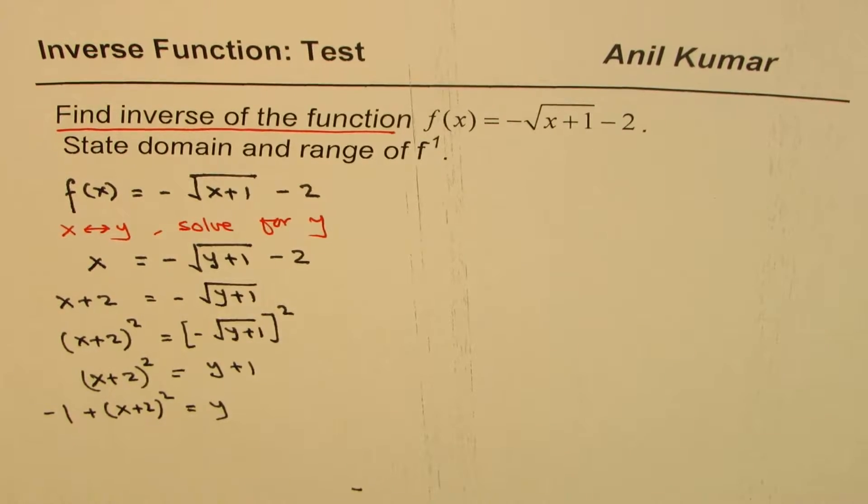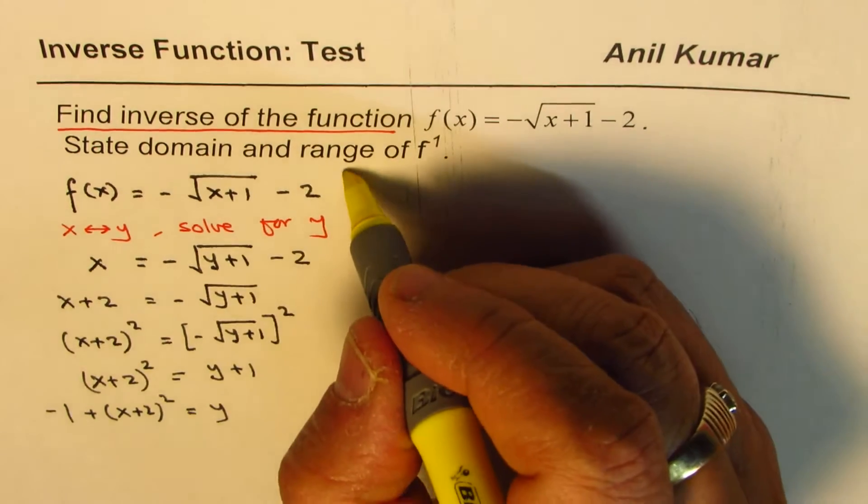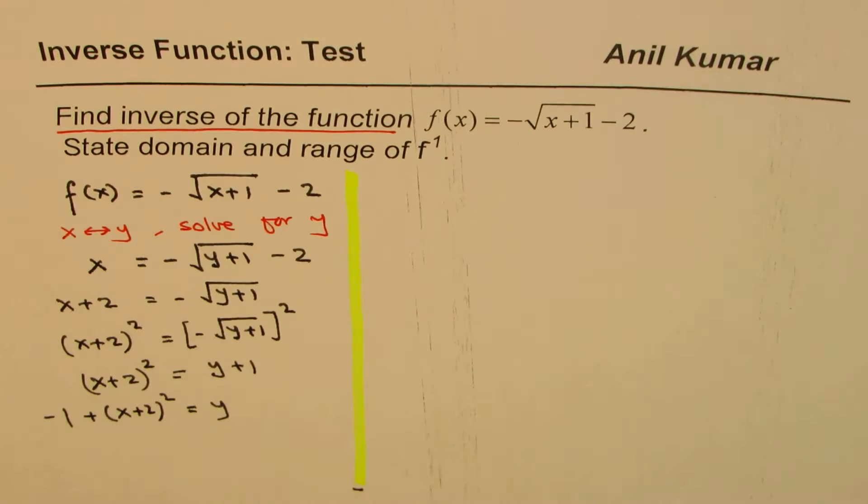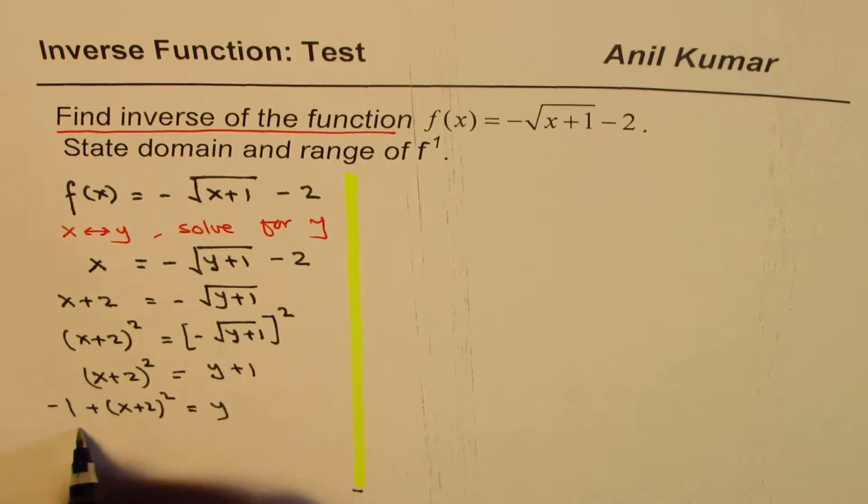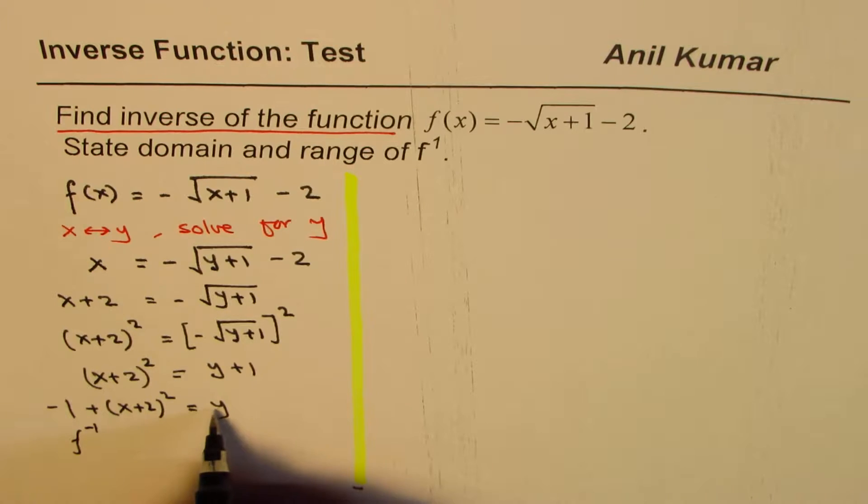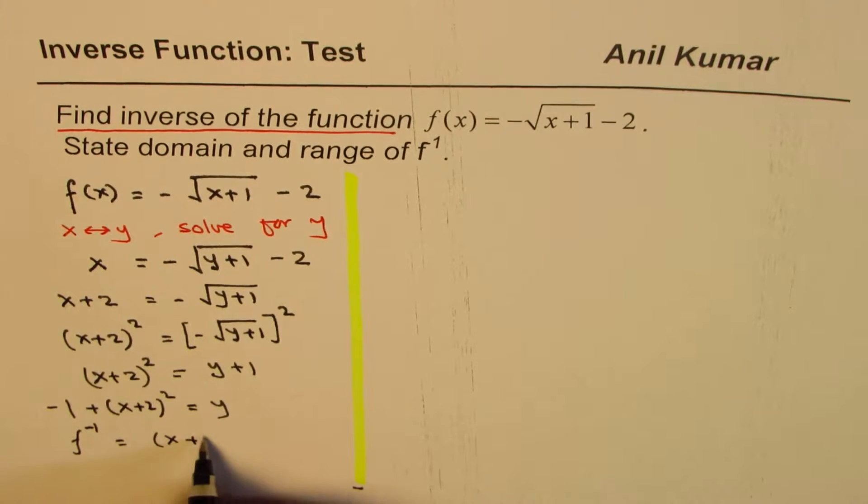And then you can write that. Let me write it on the right side. So let me complete it here. And then I'll take the function on this side. So here you can write that f inverse, which is y, is equals to x plus 2 whole square minus 1.